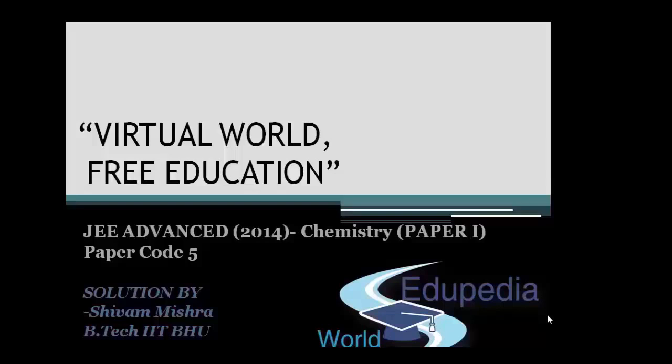Today we will be discussing the solutions to IIT JEE Advanced 2014 chemistry paper 1. The paper code which we are using is 5. So in case you have the code you can follow the questions from there.